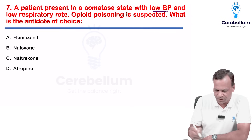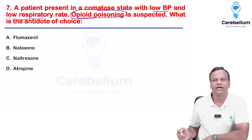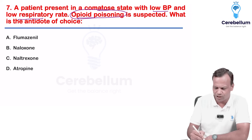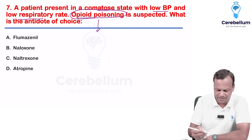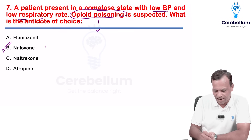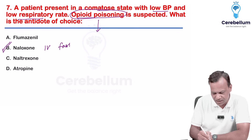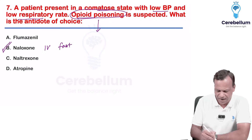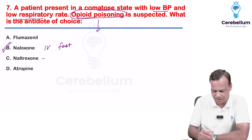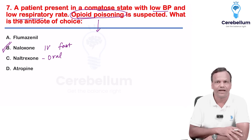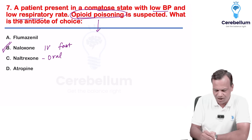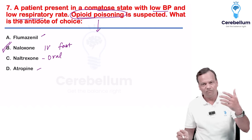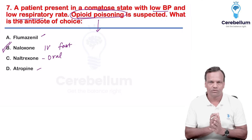A person has low BP, low respiratory rate, comatose state — opioid poisoning is suspected. The antidote of opioids is naloxone, given IV. It is fast-acting but short-acting. Naltrexone can be used for maintenance and is an oral drug, but the answer here is naloxone. Flumazenil is for benzodiazepine poisoning; atropine is for organophosphate poisoning. For opioid poisoning, the answer is naloxone.